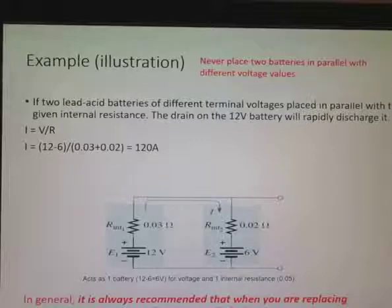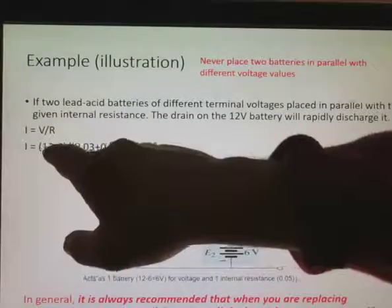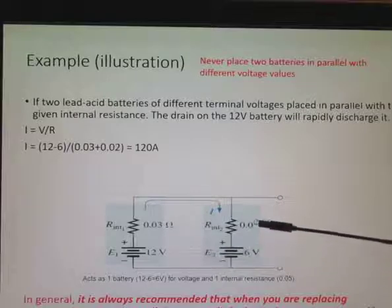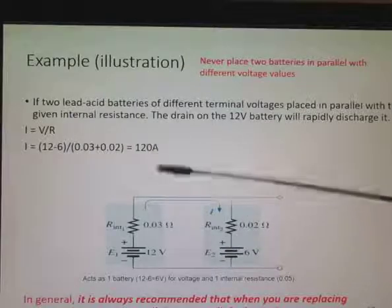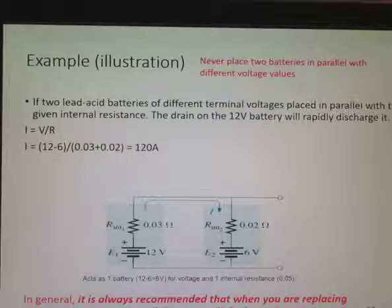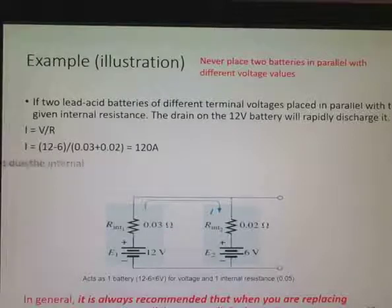And that's the reason why when you change batteries, you want to change them all at one time. So if you have two lead acid batteries of different values, what happens is, using Ohm's law, you get the voltage is 12 minus 6, and the resistance are these two here added, and I get 120 amps. So you get a lot of surge of high current, very dangerous. And it's always recommended that when you replace batteries in series or parallel, replace all the batteries.